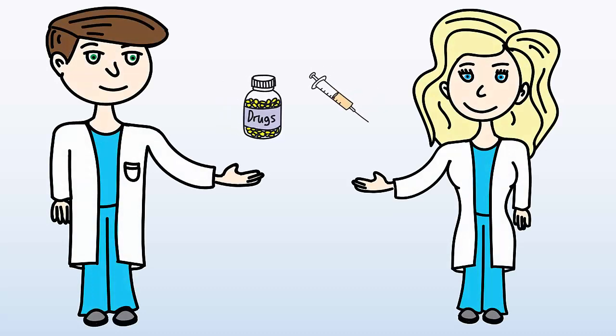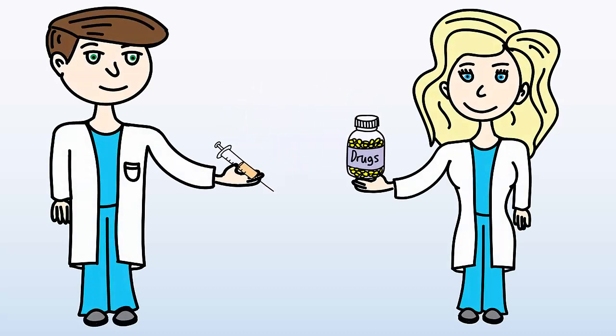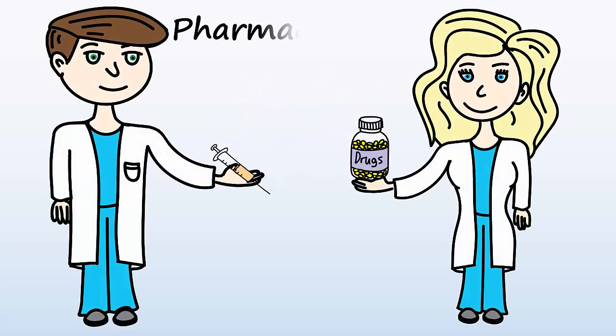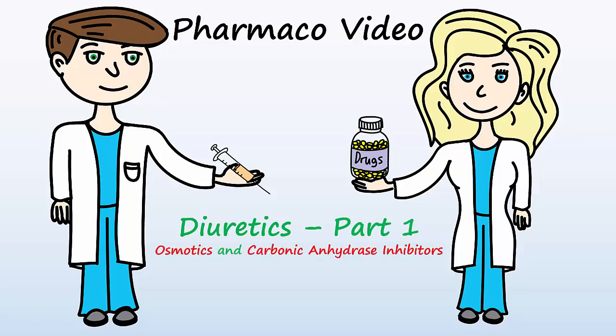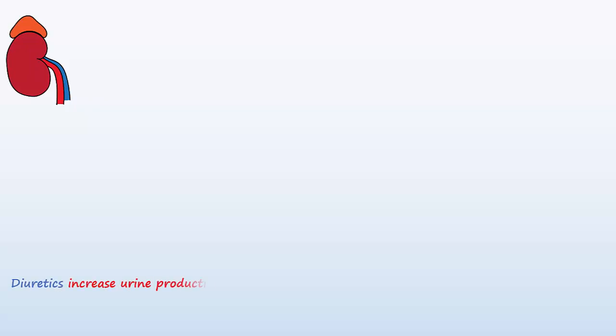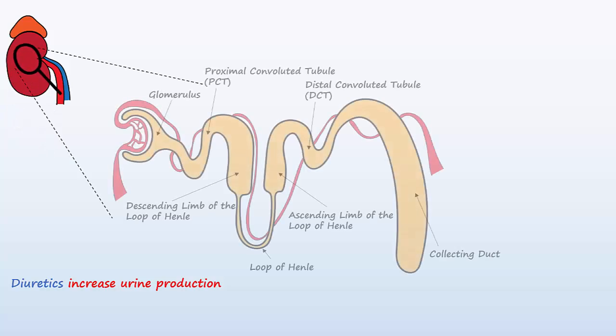Welcome to another pharmaco video. Today, let's talk about diuretics, specifically osmotic diuretics and carbonic anhydrase inhibitors. Diuretics increase the rate of urine production by several mechanisms. All of the diuretics exert their action on the main structural unit of the kidney, known as the nephron.